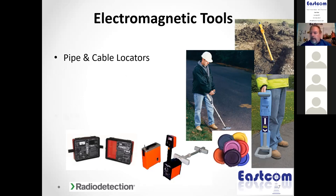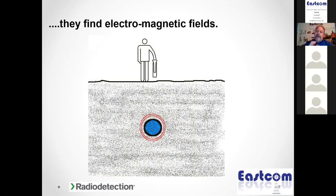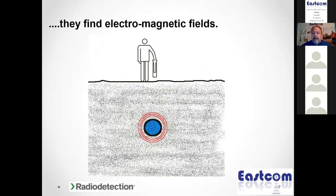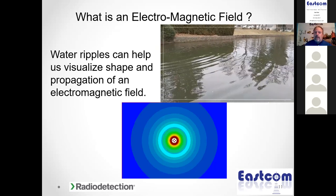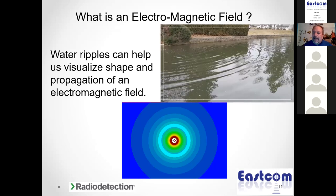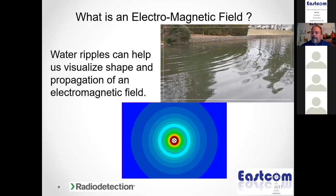The science we use in locating utilities is electromagnetic field science. We have a number of tools in our toolbox: pipe and cable locators, metal detectors, ferrous metal detectors, magnetic marker ball locators, and ground penetrating radar — all use EM or electromagnetic field technology. Our presentation will concentrate on pipe and cable locators. Your locator doesn't see pipes or cables — it sees the magnetic field we generate on that pipe or cable.